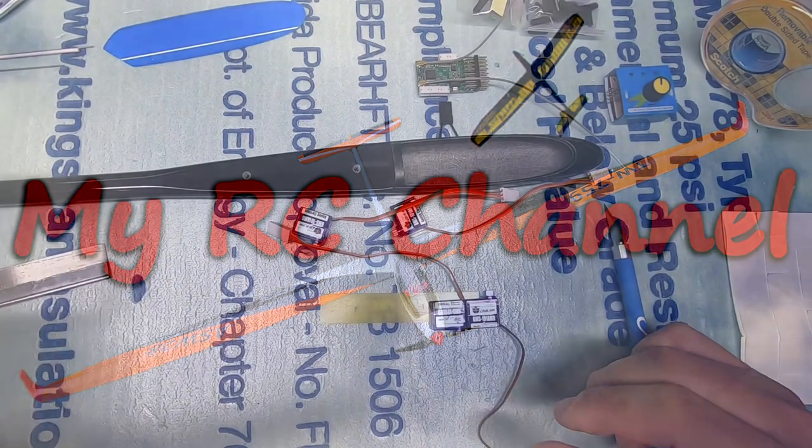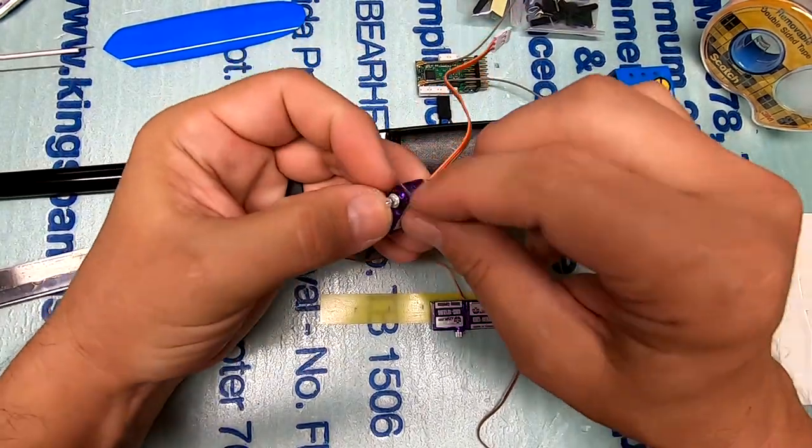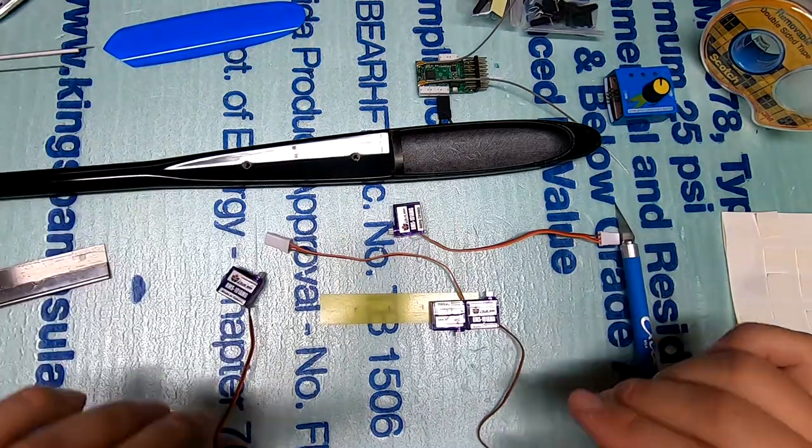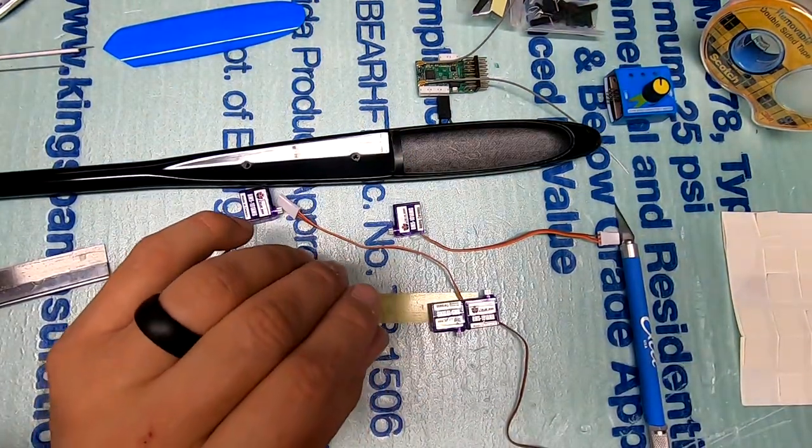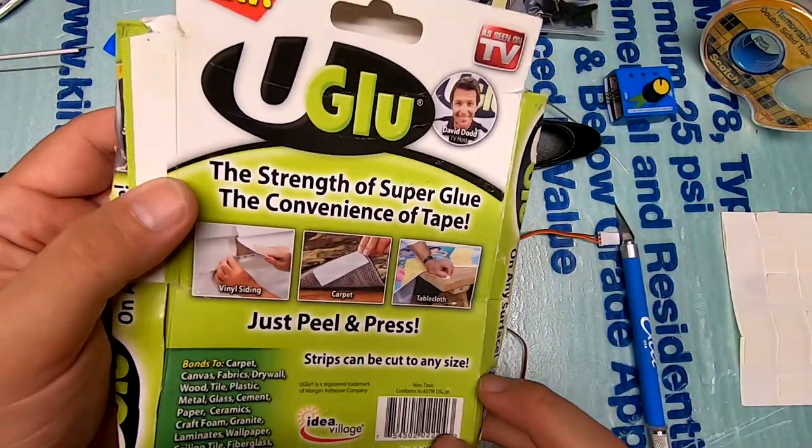Hi, my name is CJ and this is my RC channel. Okay, servos are trimmed and I think I've come up with a mounting method that I like. Okay, I've had this stuff for years, it's a type of two-sided glue.